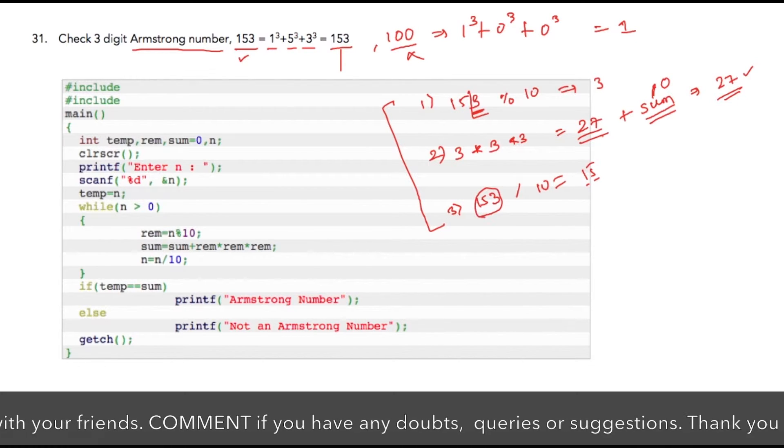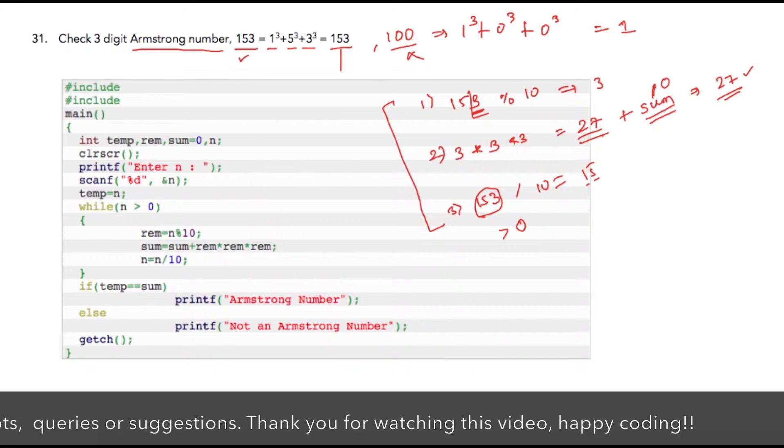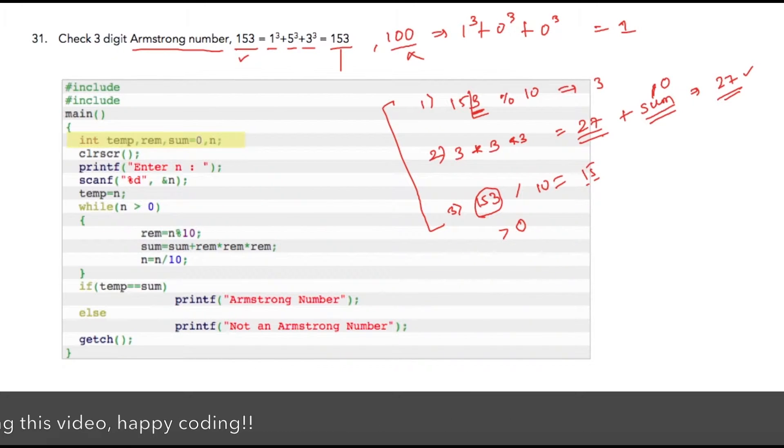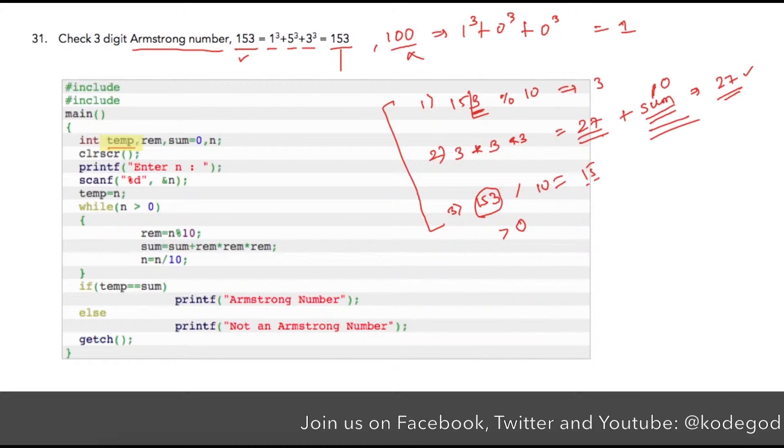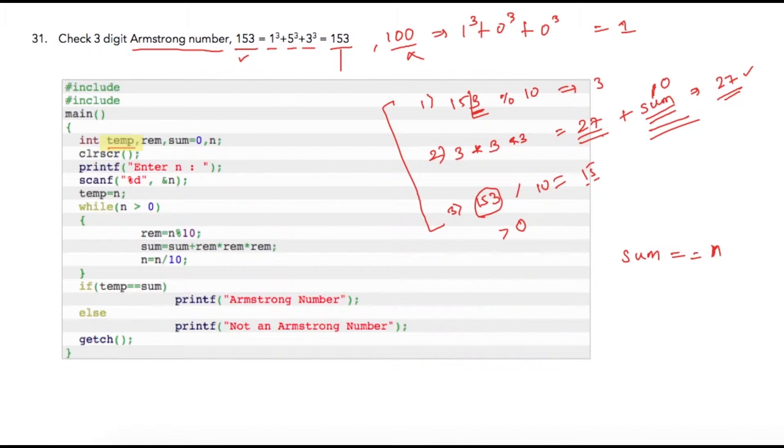Let us check our program. I am using these variables: temp is basically to check at the end of the program whether our final addition which will be stored into sum is equal to our original number n. Because n will become 0 at the end of the loop, we are storing that value into temporary variable so that we can have simple condition as sum equal to temp.